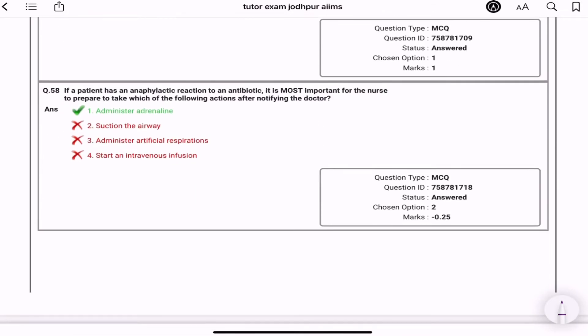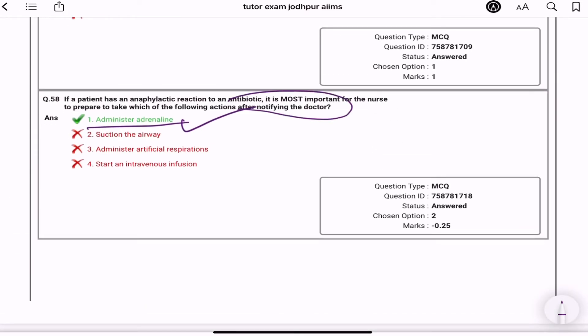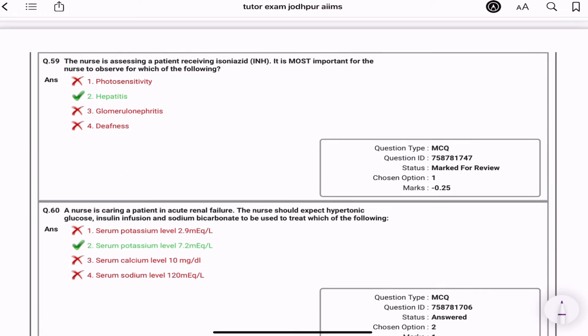If a patient has anaphylactic reaction to an antibiotic, it is most important for a nurse to prepare to take which of the following action after notifying the doctor? Administer epinephrine. Thik hai doctor tab tak aaye, aap epinephrine to prepare kar loge na. Next is the nurse is assessing the patient receiving INH. Aapko de diya hai, ATT hai. ATT ke baad aapke bas sari chiz aapke mind mein yaad rehni chahiye. It is most important for a nurse to observe which of the following? Kya chiz is me se apne dekhani hai? Appetite is apne dekhani hai. Reason kyunki kya hai? Hepatotoxic hai.